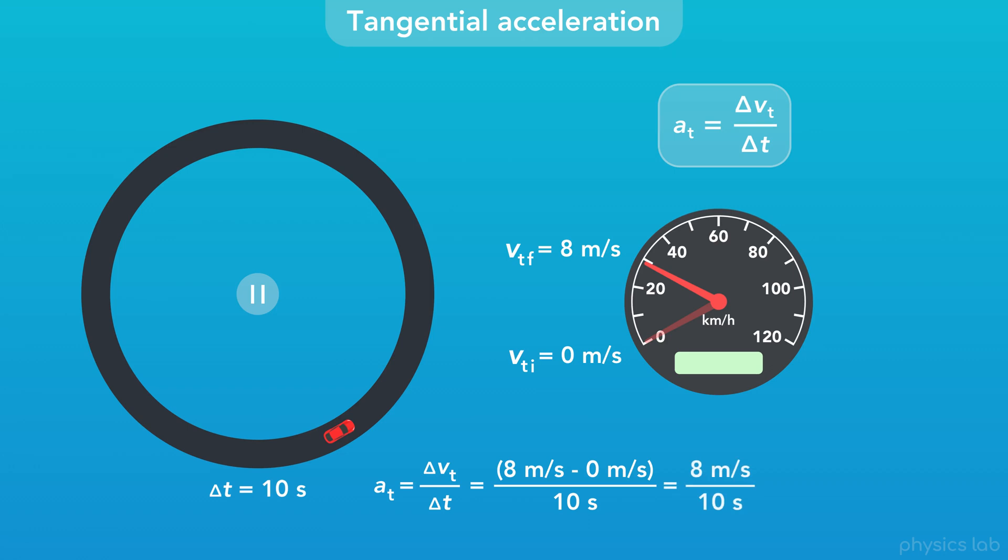That gives us 8 meters per second divided by 10 seconds, which equals 0.8 meters per second, per second. Remember the unit meters per second per second is the same as meters per second squared.